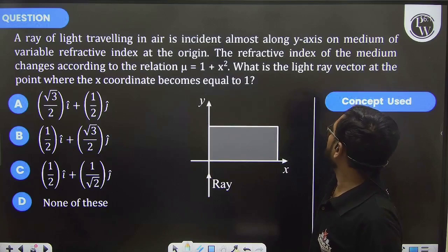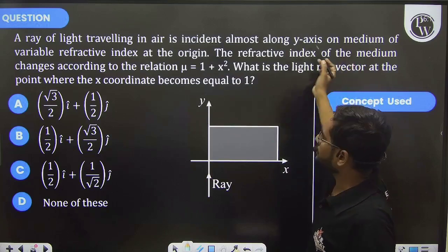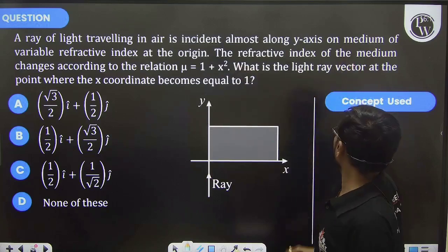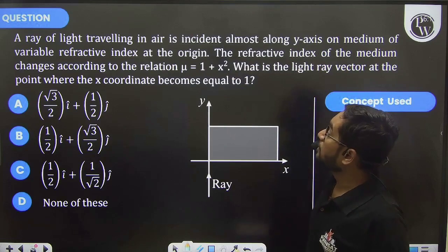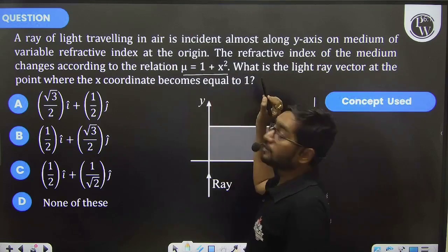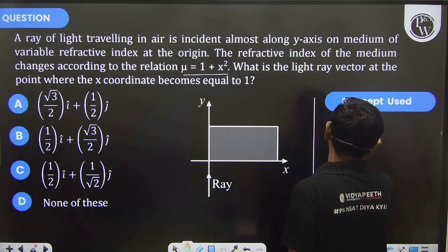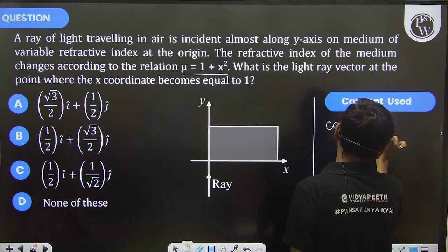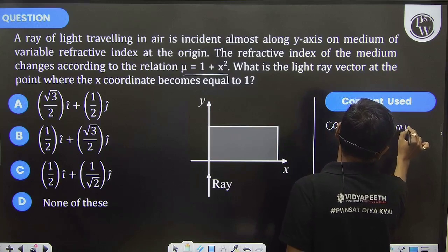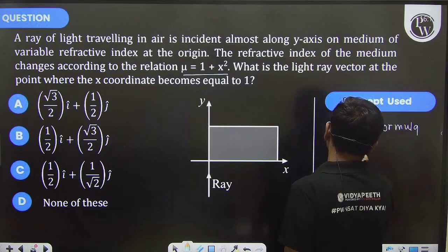A ray of light traveling in air is incident almost along the y-axis on a medium with variable refractive index at the origin. The refractive index of the medium changes according to this relation. This type of question is based on Cauchy's formula, and you can use Snell's law here.